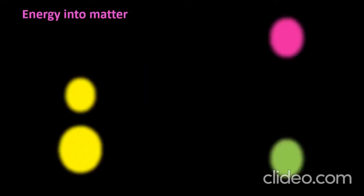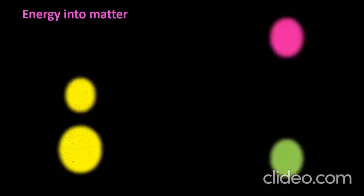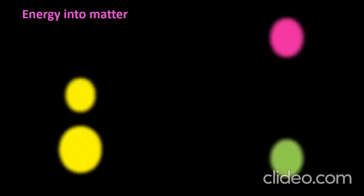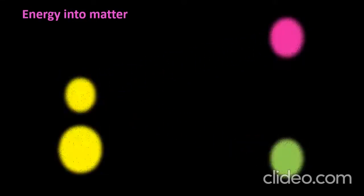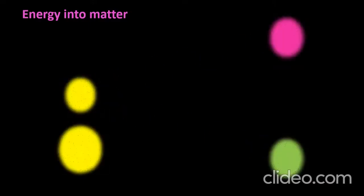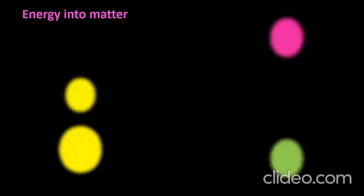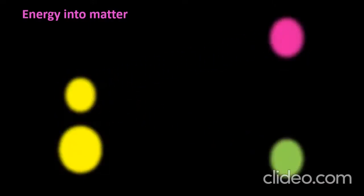This process is called pair production, in which a photon converts into an electron-positron pair. This process is also called materialization of energy, that is, conversion of energy into matter.